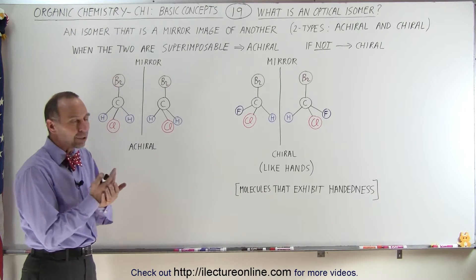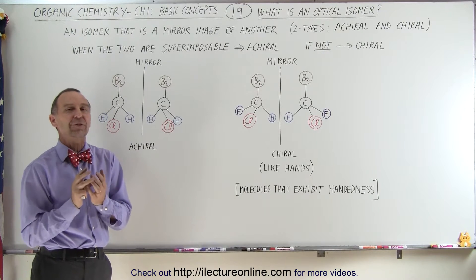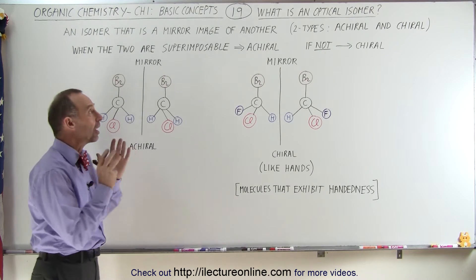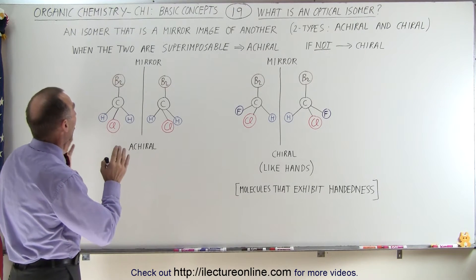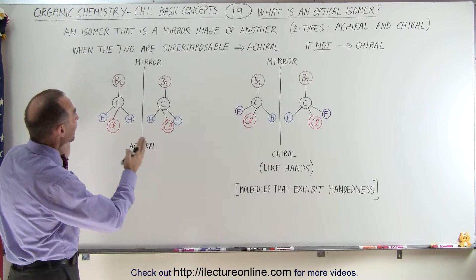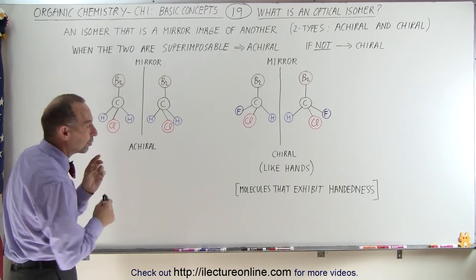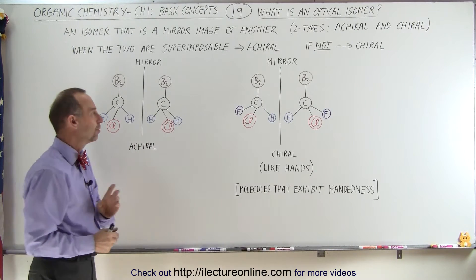For an optical isomer, it's slightly different. Optical isomers are isomers that are mirror images of one another, but there are two different kinds.